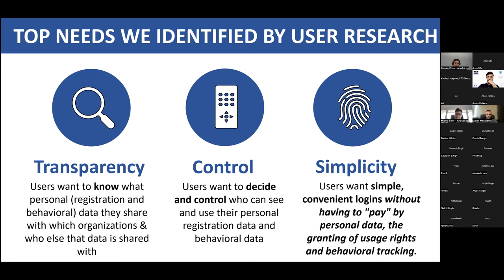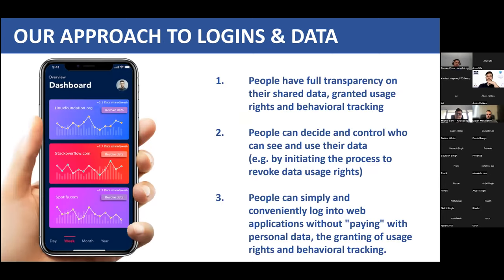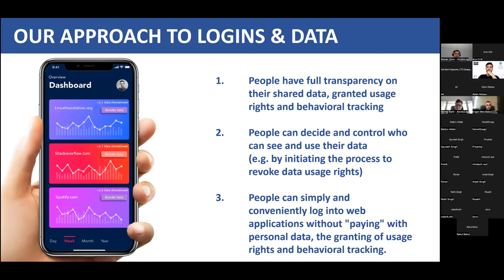We found that the top needs identified through user research were transparency, control, and simplicity. Users want to know what personal data they share with which organizations and who else the data is shared with. They want to decide and control who can see and use their personal registration and behavioral data. And they want simple, convenient logins without paying with personal data, user rights granting, or behavioral tracking. Our new approach addresses all three of these needs.